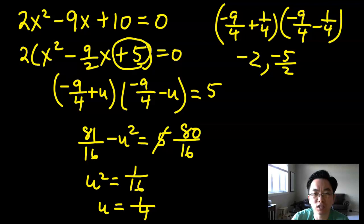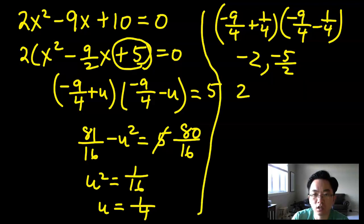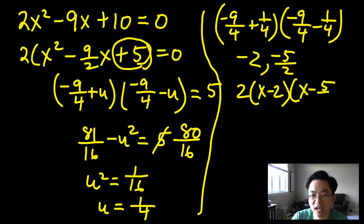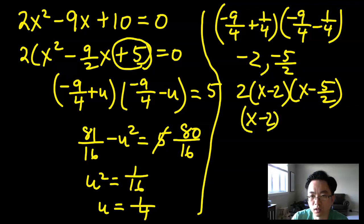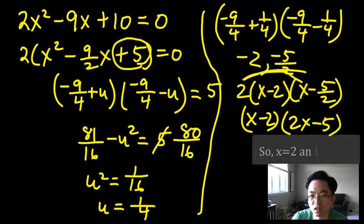So those are our two numbers — negative 2 and negative 5/2 — which have a product of 5 and a sum of negative 9/2. Putting it back together, I end up with 2 times (x minus 2)(x minus 5/2), which gives us the factored form: (x minus 2)(2x minus 5) equals zero.